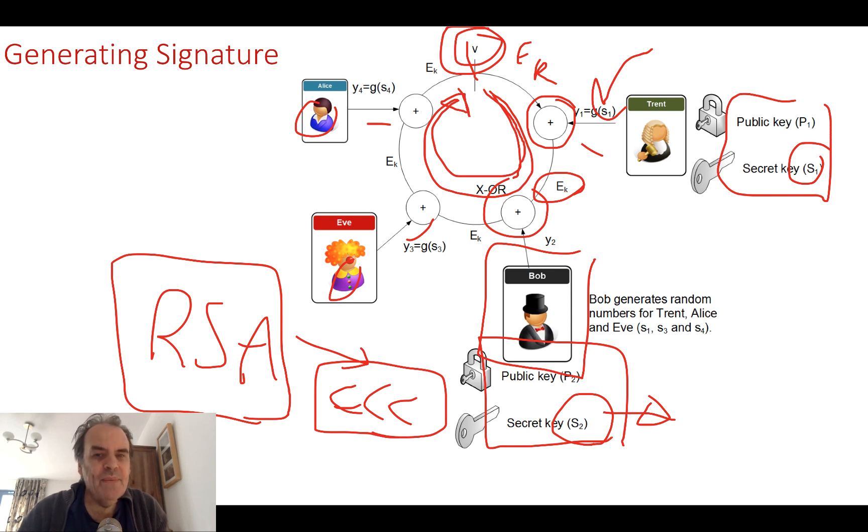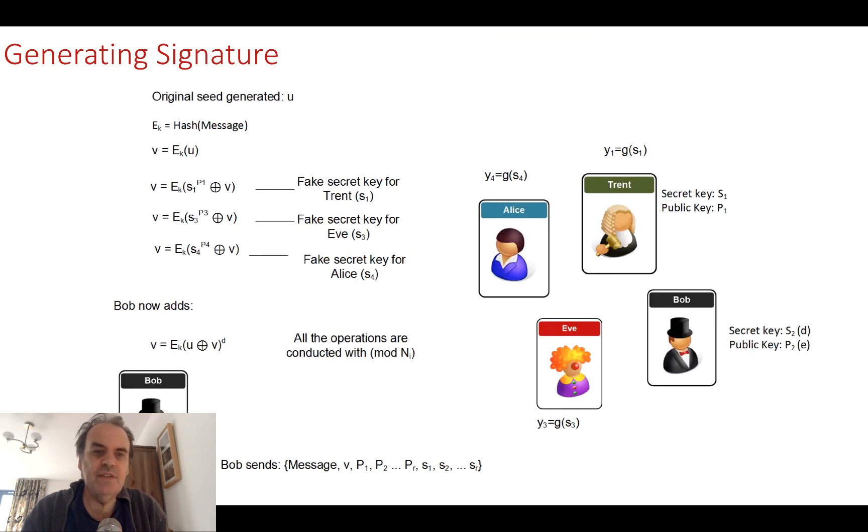I hope you remember what we actually did there and how we're using the keys. Remember Bob is signing, but he doesn't want his signature to be seen, that he has actually signed the message, but for the group to know that it's been signed. Even someone in the group cannot tell which of the entities actually signed the message.